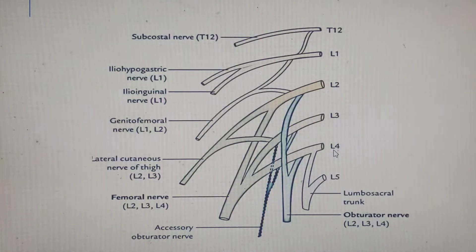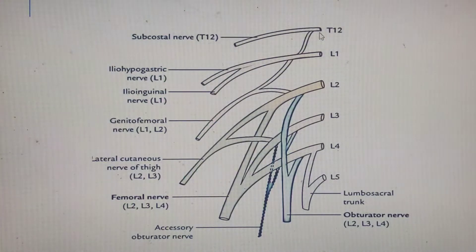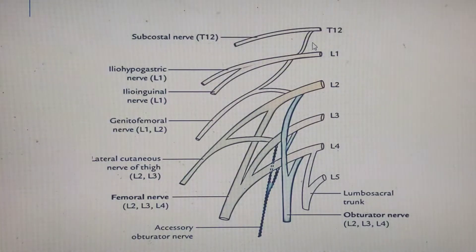From T12 all the way to L4, the ventral primary rami of the spinal nerve segments in the lumbar region give us this lumbar plexus. These ventral rami also divide again into anterior and posterior divisions, forming secondary rami coming from them.